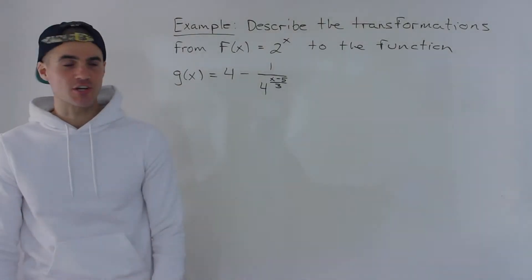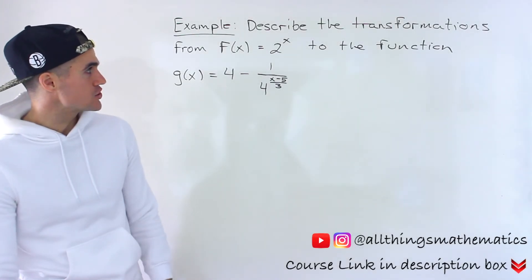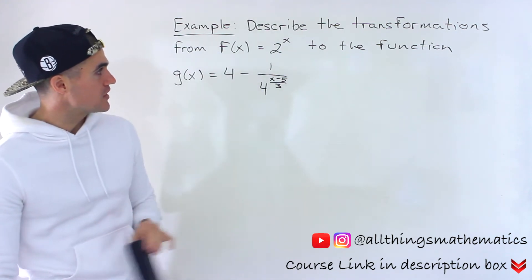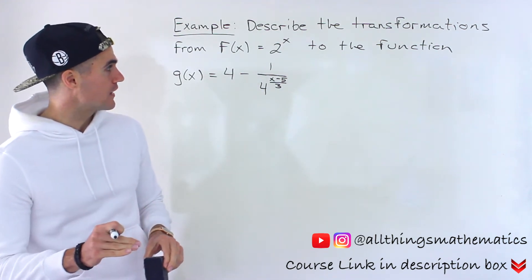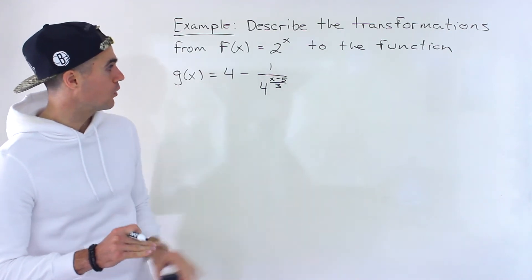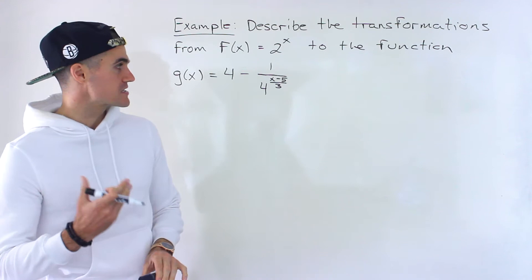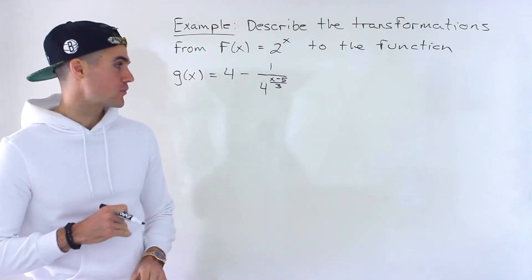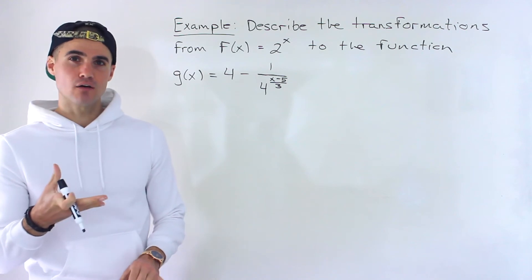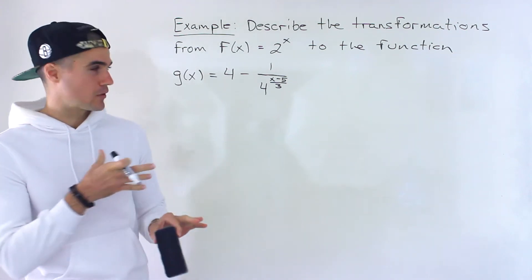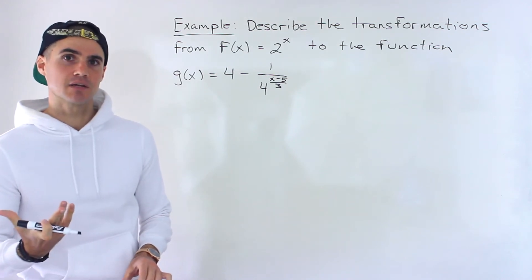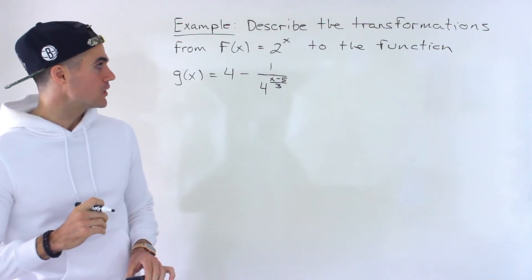Welcome back, Patrick here. Moving on to the next question. We have to describe the transformations from the parent function 2 to the power of x to this function: g of x equals 4 minus 1 over 4 to the power of x minus 5 all over 3. This question is fairly tough — there's a lot going on here. It's probably one of the tougher transformation questions you can get. A student sent it to me and I wanted to make a video on it.